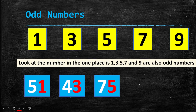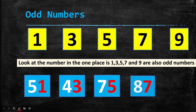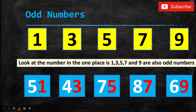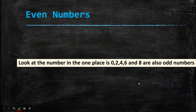Next: 75 — in the ones place it is written 5, and 5 is an odd number, so 75 is an odd number. Next: 87 — in the ones place it is written 7, and 7 is an odd number, so 87 is an odd number. These are a few examples of odd numbers.